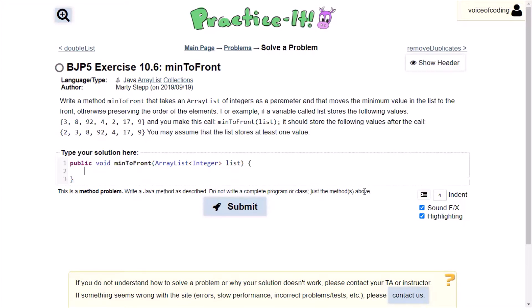So the first thing we need are the minimum value, but also the index of the minimum value so we can remove it later. So I'm going to have a min value. And we're going to set it to the maximum integer value possible.